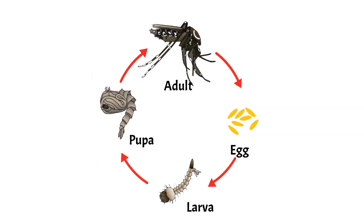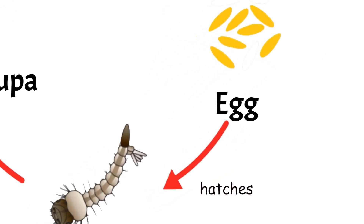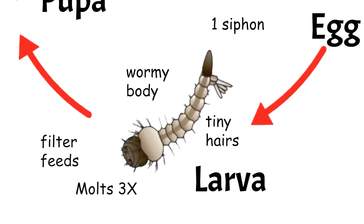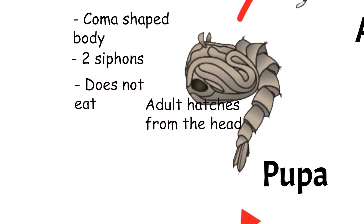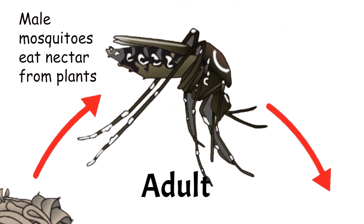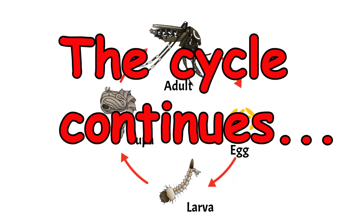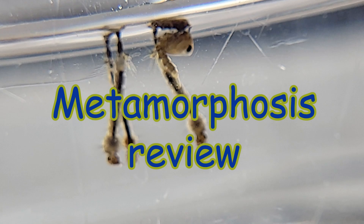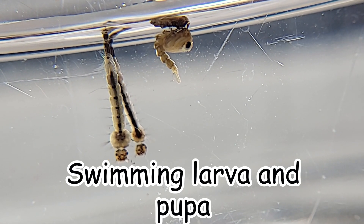Let's review. There are four stages in the life cycle of a mosquito. In the first stage, a female lays eggs on the inside of a container of water. Mosquito larvae have worm-like bodies with tiny hairs, one siphon to breathe, they filter feed, eat a lot, and molt three times. Before transforming into a pupa — which has a comma-shaped body, two siphons, and does not eat — and the adult hatches from the head. After hatching, male mosquitoes feed on nectar from plants, and female mosquitoes drink blood to make their eggs, and the cycle continues. Metamorphosis is the transformation from the swimming larvae and pupae to the flying adult.